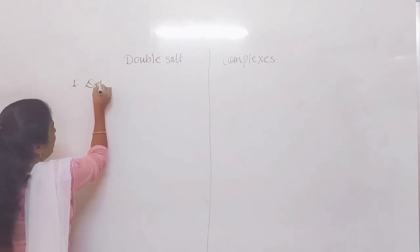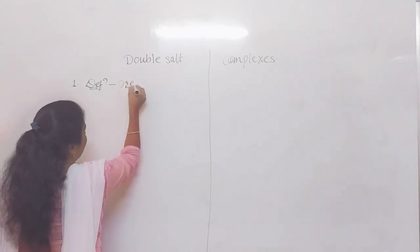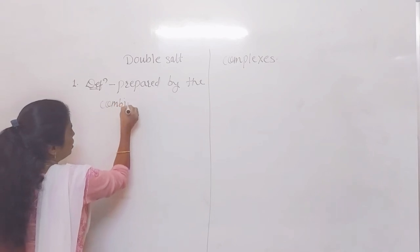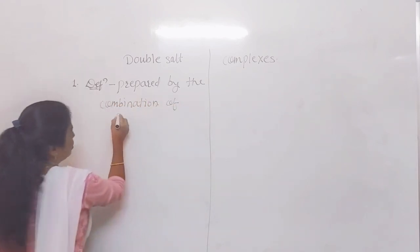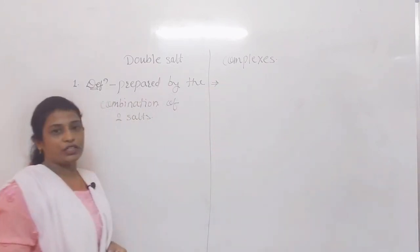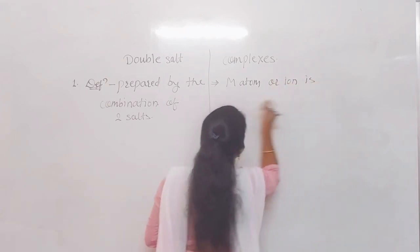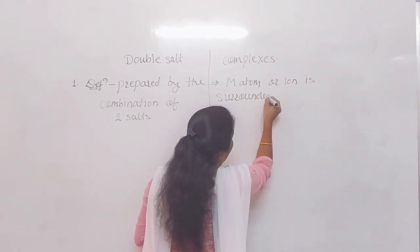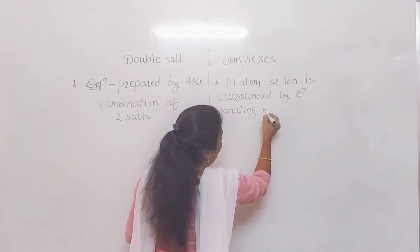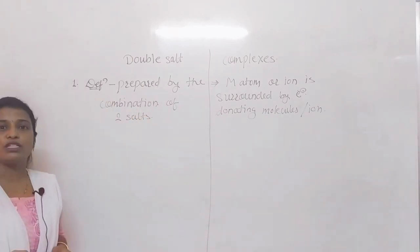If we consider double salts, these double salts are prepared by the combination of two salts — that is the simple definition of the double salt. Now, complexes or coordination compounds are those in which a metal atom or ion is surrounded by ligands, or we can say electron-donating molecules or ions. That completes our first point.